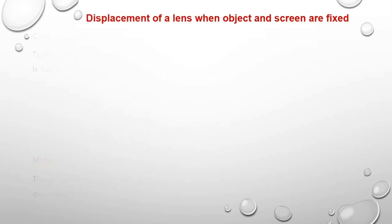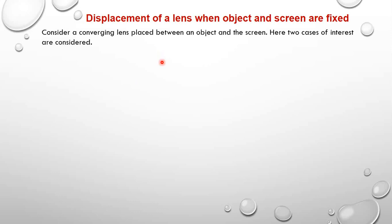Let's look at the displacement of the lens when the object and the screen are fixed. Here we are going to consider a converging lens placed between an object and the screen, and we are going to have two cases of interest. In the first case, the position of the screen is adjusted until a clear magnified image is obtained on the screen.